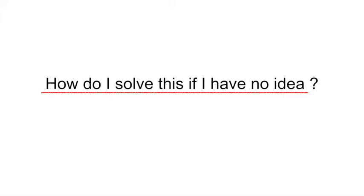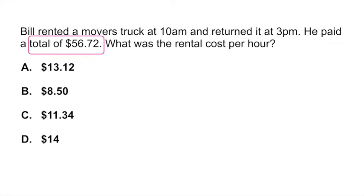If you look at this problem and have no idea how to solve it, what you can do is take advantage of the answer options they provide. We know he paid a total of $56.72 and used the truck for 5 hours, so you just plug in the answers until you get the correct response. If we look at the first option, we multiply 5 hours times $13.12, which gives $65 — that's incorrect.